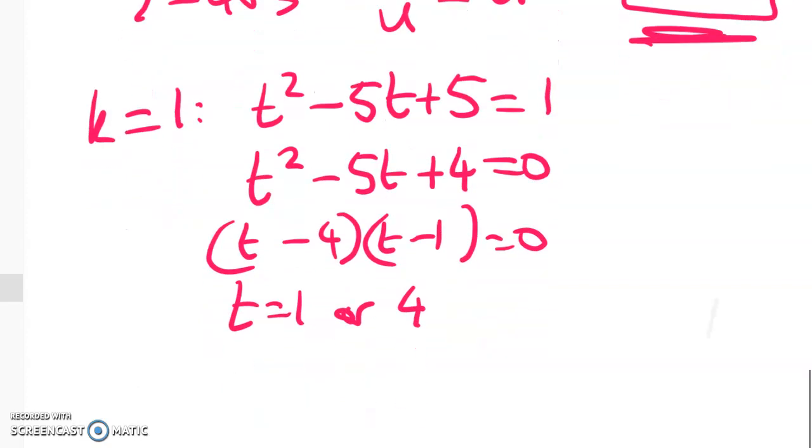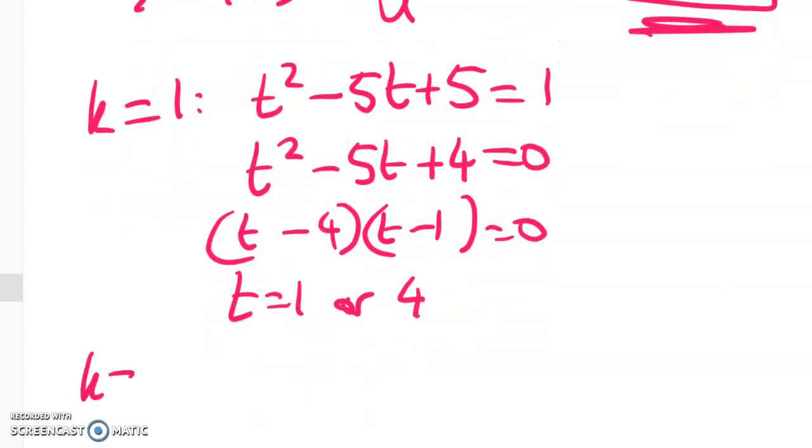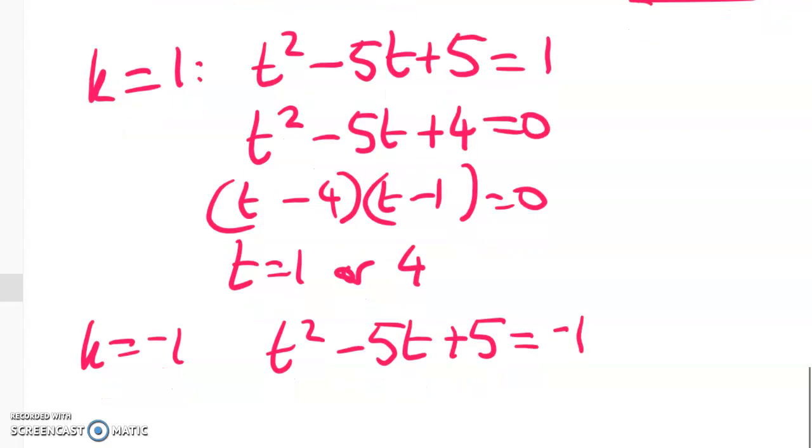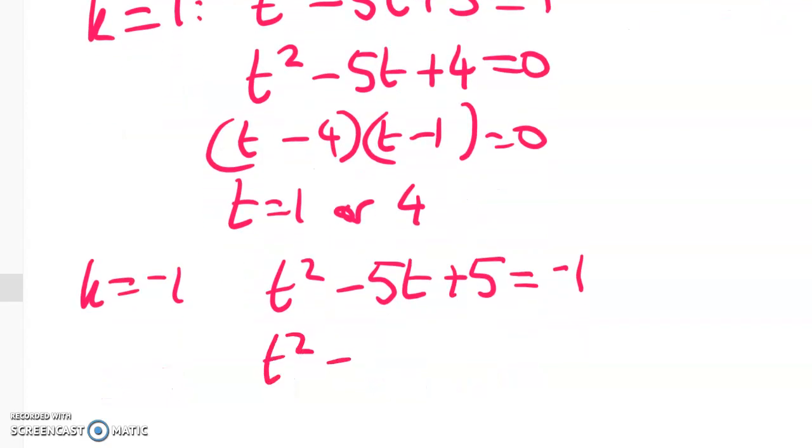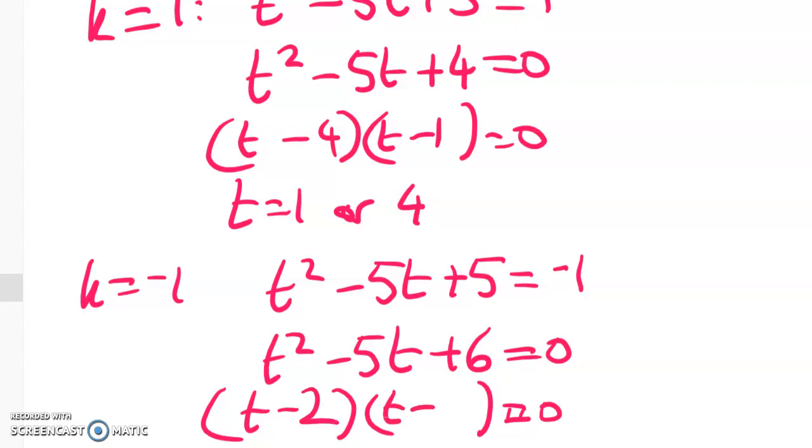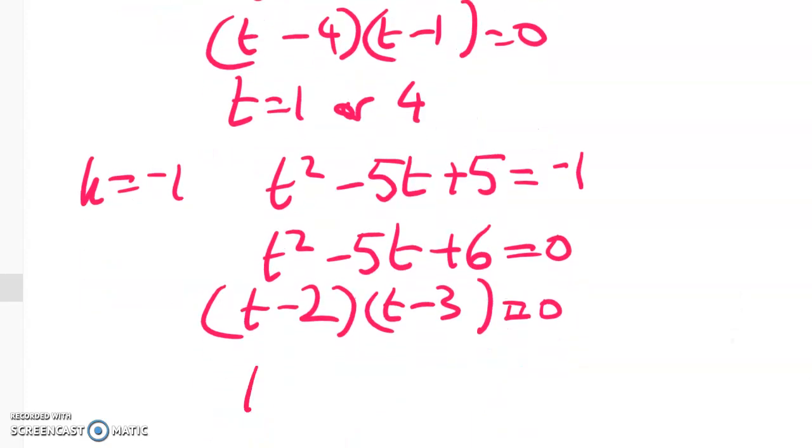Now we're going to do the same thing working with k equals negative 1. t squared minus 5t plus 5 gives me negative 1. t squared minus 5t plus 6 equals 0. Another really nice easy quadratic. This time I get t minus 2 times t minus 3. So t is equal to 2 or 3.